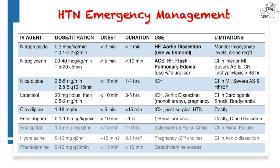Nitroglycerin is also a direct vasodilator, but because it has more venodilation than arterial dilation, especially at lower doses, it is a less effective agent than nicardipine or nitroprusside. However, it is the agent of choice for flash pulmonary edema and is extremely ACS-friendly, as it will decrease demand on the heart. Unfortunately, after 48 hours of use, nitroglycerin will often have a tachyphylaxis effect and will no longer be effective.